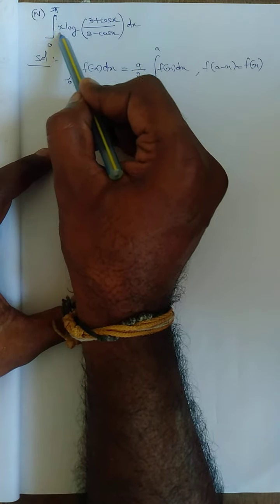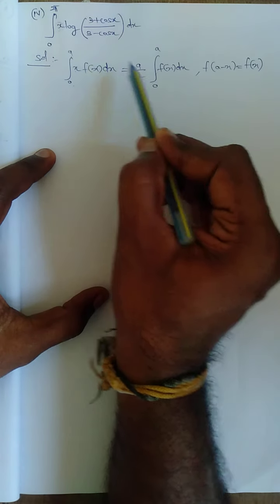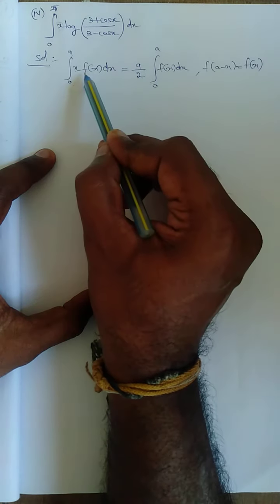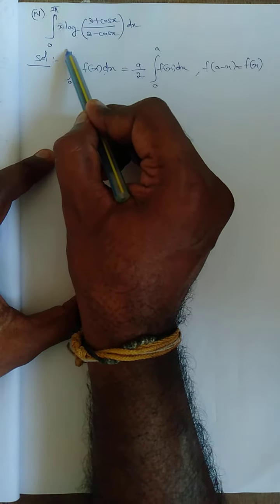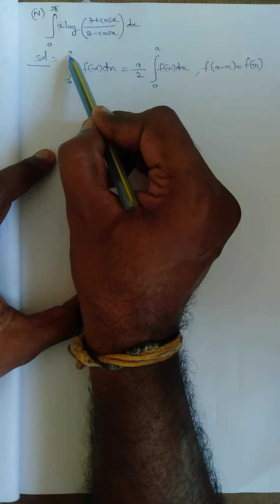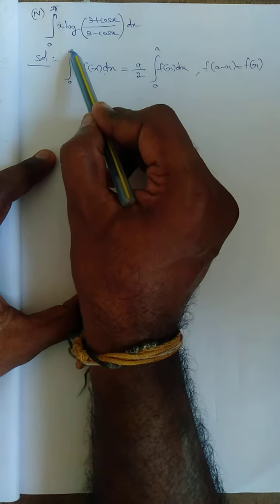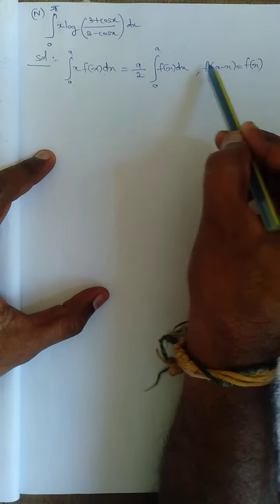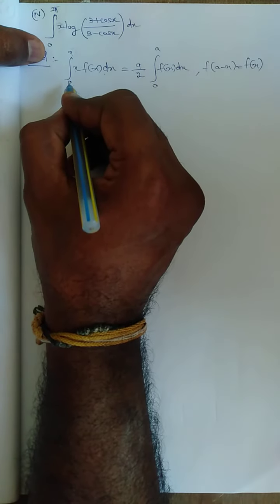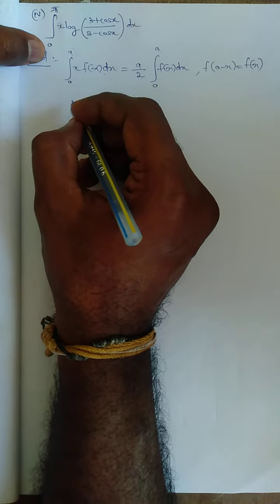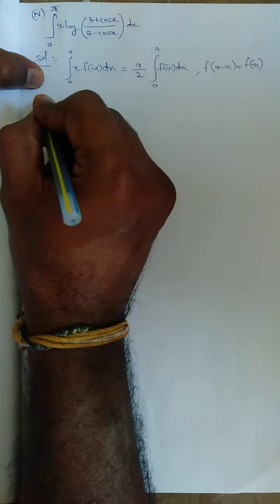Whenever x·f(x) dx appears, this becomes (a/2)·∫₀ᵃ f(x) dx, provided f(a-x) = f(x). So using this first property, I will derive the result.